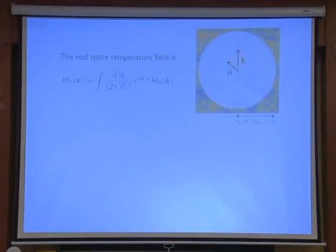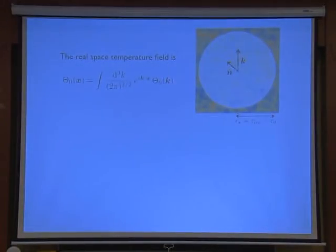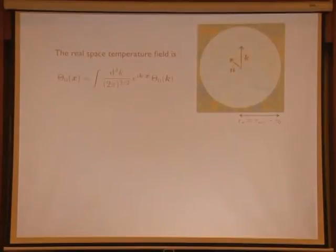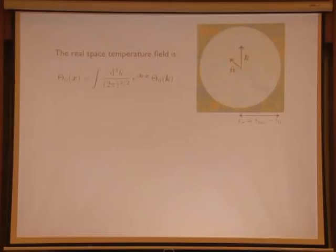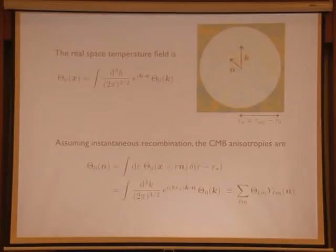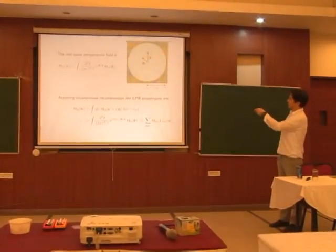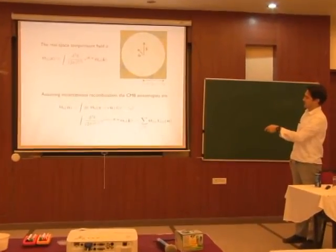This is what we now have to do mathematically — it's not very hard. We can define a real space temperature field just as the Fourier transform of the solution that we have found. To indicate the geometry: the plane wave has a wave vector, and in a flat universe the distance to the surface of last scattering is given by the difference in conformal times. In a curved universe, there will be extra factors in that relationship.